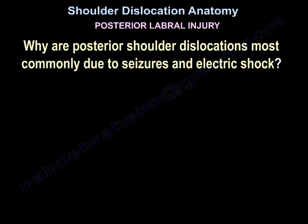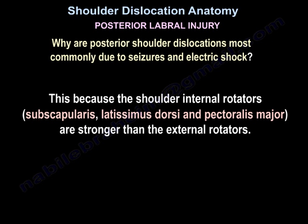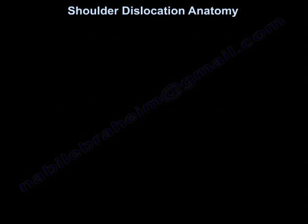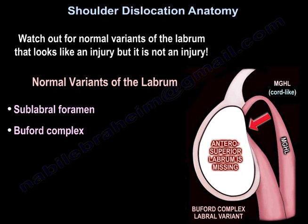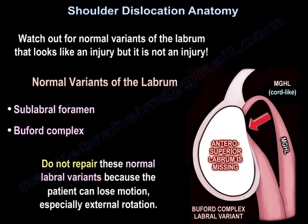You can diagnose posterior labral injury clinically by the jerk test or the Kim test. Posterior shoulder dislocations are most commonly seen in seizures and electric shock because the shoulder internal rotators — the subscapularis, latissimus dorsi, and pectoralis major — are stronger than the external rotators. Watch out for normal variants of the labrum that look like an injury but are not. Normal variants include the sublabral foramen or the Buford complex. Do not repair them because the patient can lose motion, especially external rotation.